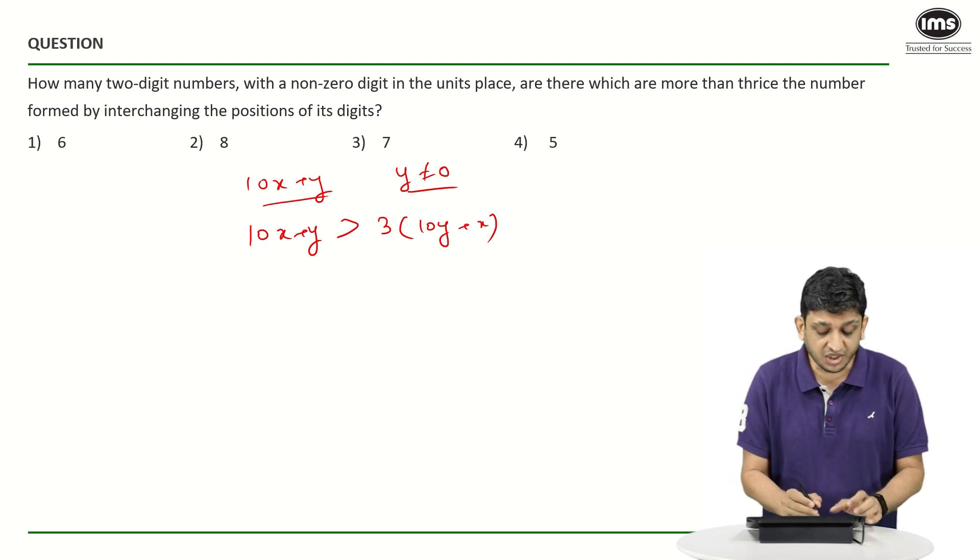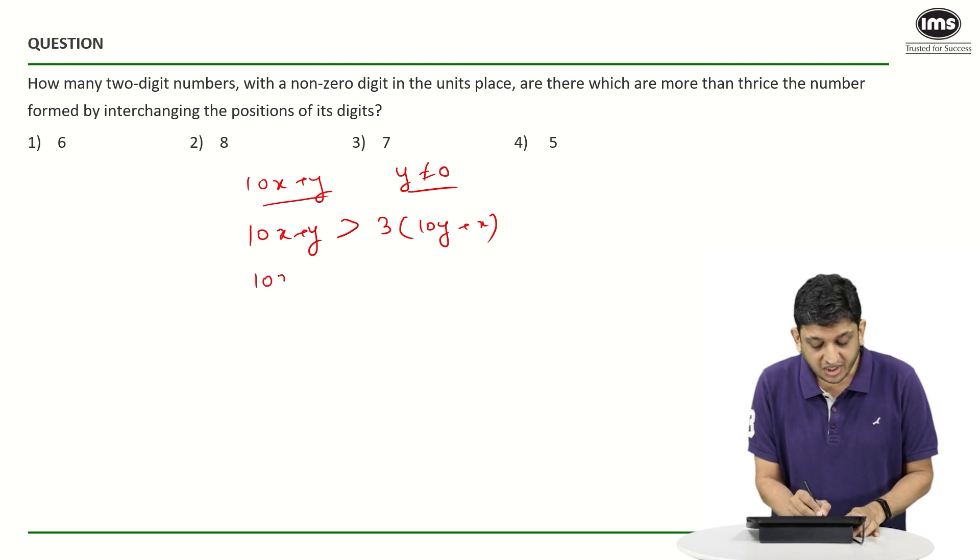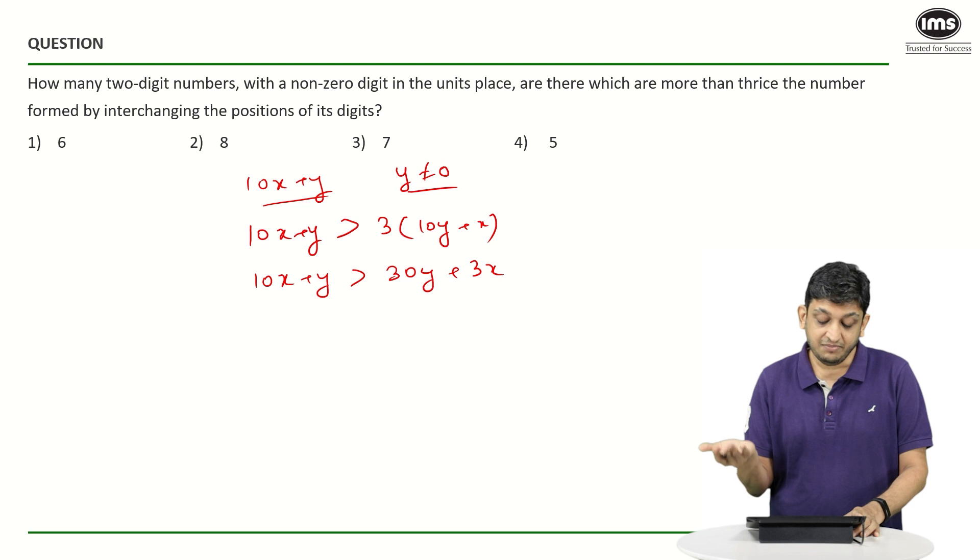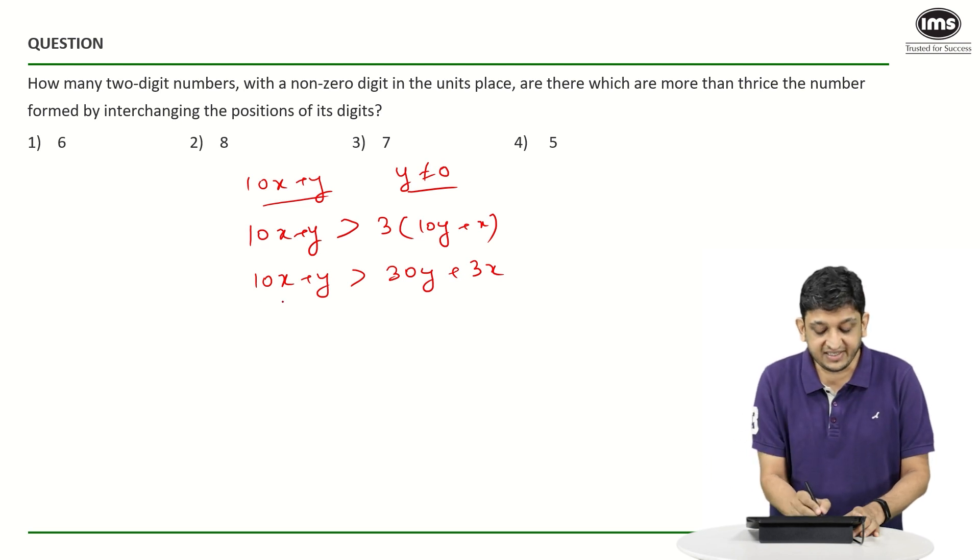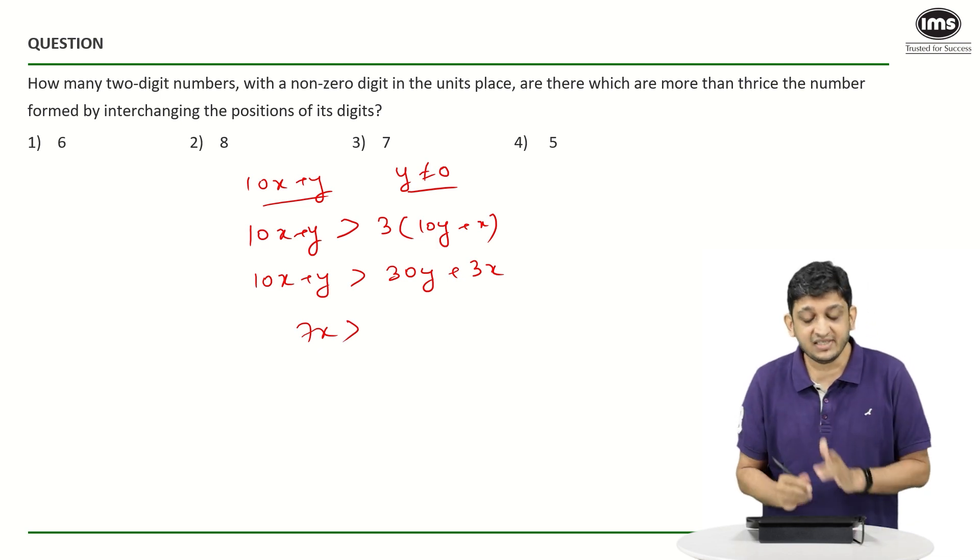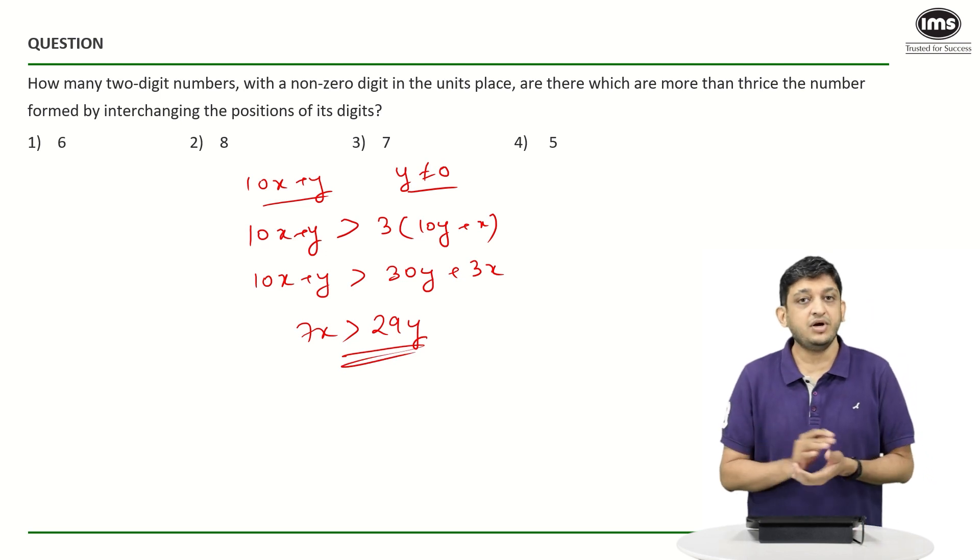Now if you just simplify this, you should be able to get the answer. You are going to get 10X plus Y is greater than 30Y plus 3X. You can bring 3X to the left-hand side, so we will get 7X is greater than 30Y minus Y, that is going to be 29Y. This is what we are going to get in this particular case.